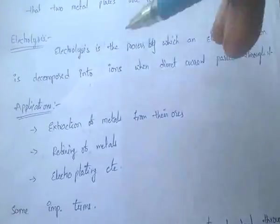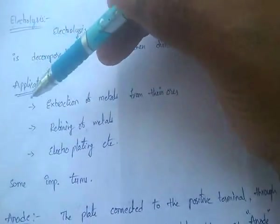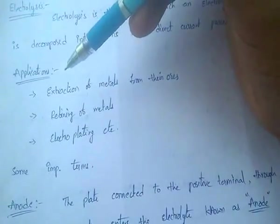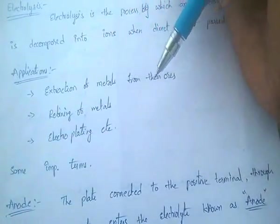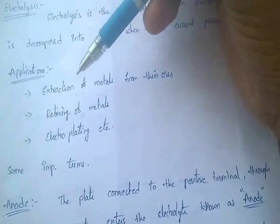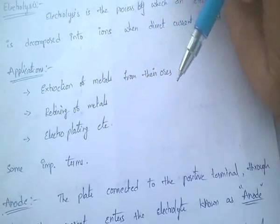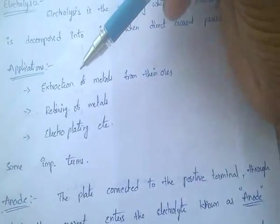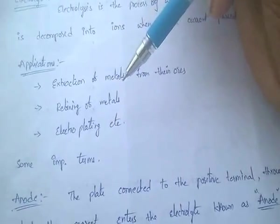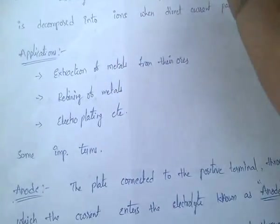Applications of electrolysis: the electrolysis process is mainly used in extraction of metals from their ores — for example, extraction of iron from iron ores. It is also used in refining of metals and in electroplating.